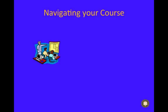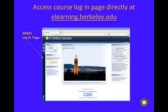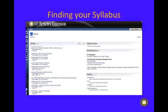Now that you have access to your course, I'd like to help navigate you through some important components in your online classroom. To log in, go to elearning.berkeley.edu. Remember to ignore the login box for extension students and look for the CalNet login for summer session students. Once you are logged in, click on the course you're enrolled in and it will take you to the course home page.